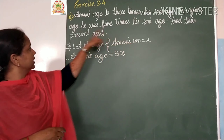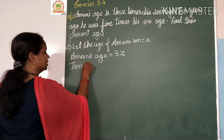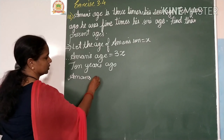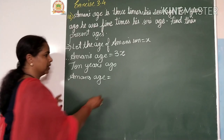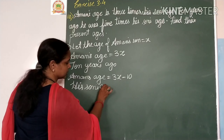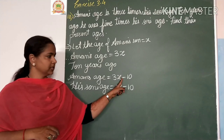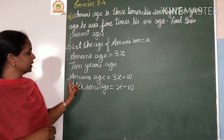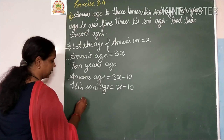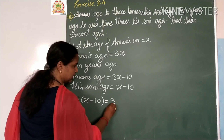10 years ago means 10 years before, so we subtract. Aman's age 10 years ago is 3x minus 10, and his son's age 10 years ago is x minus 10. 10 years ago he was 5 times his son's age, so 5 times (x minus 10) equals 3x minus 10.